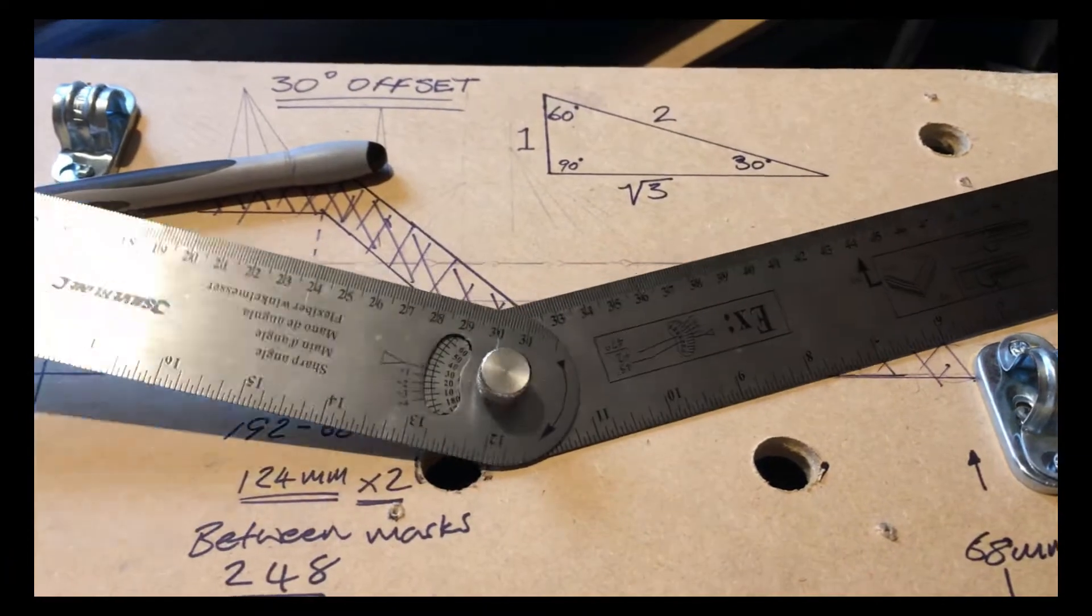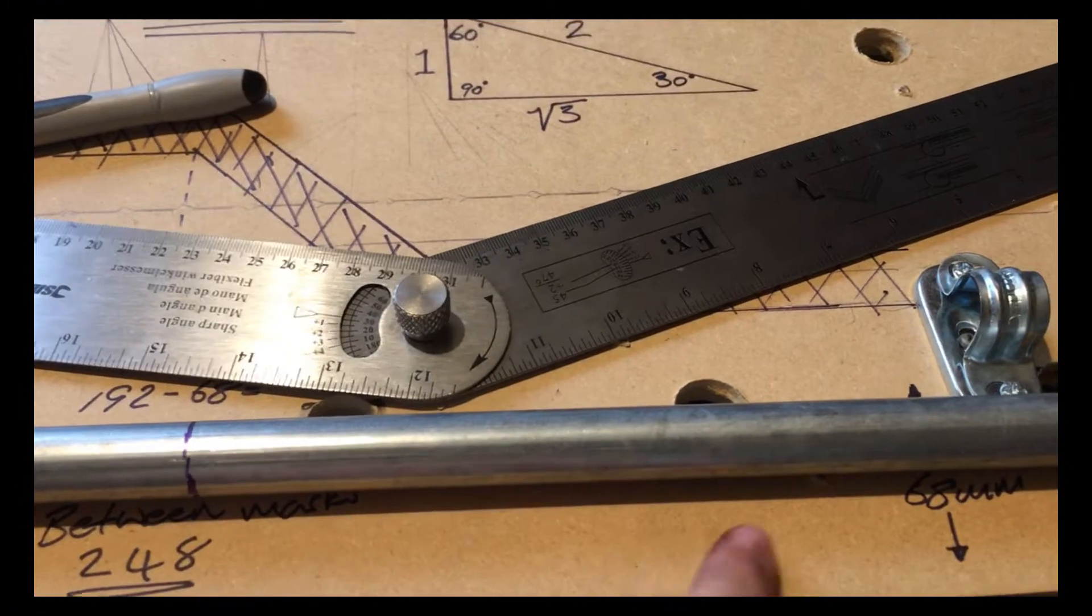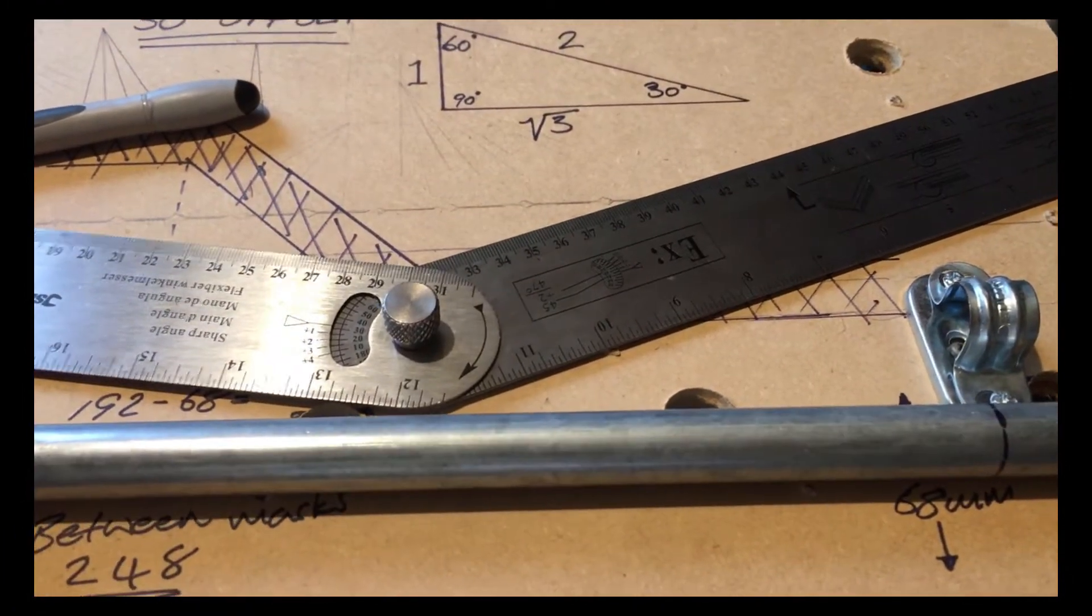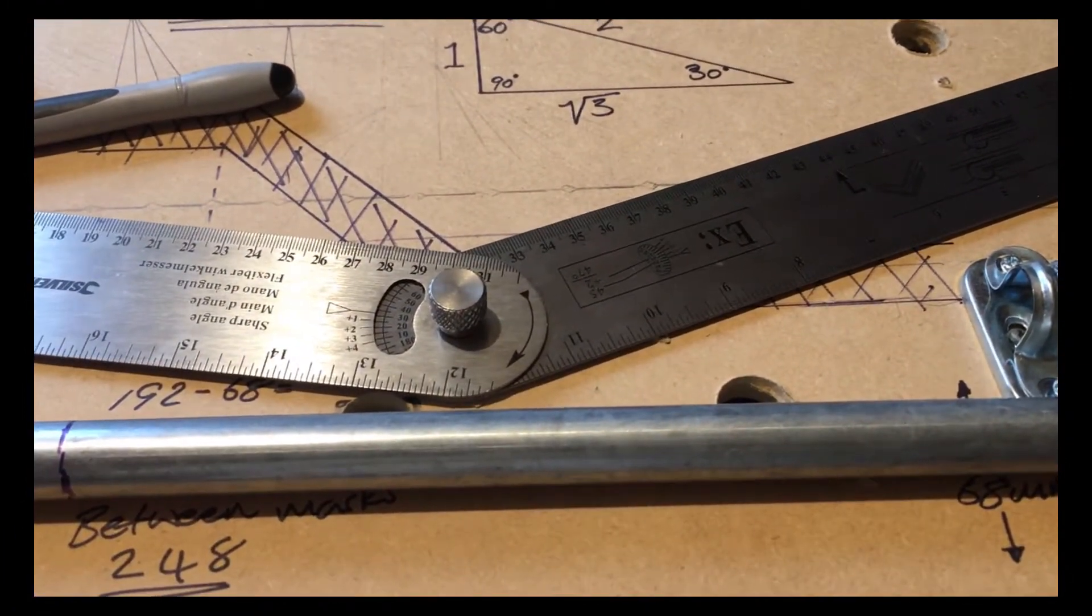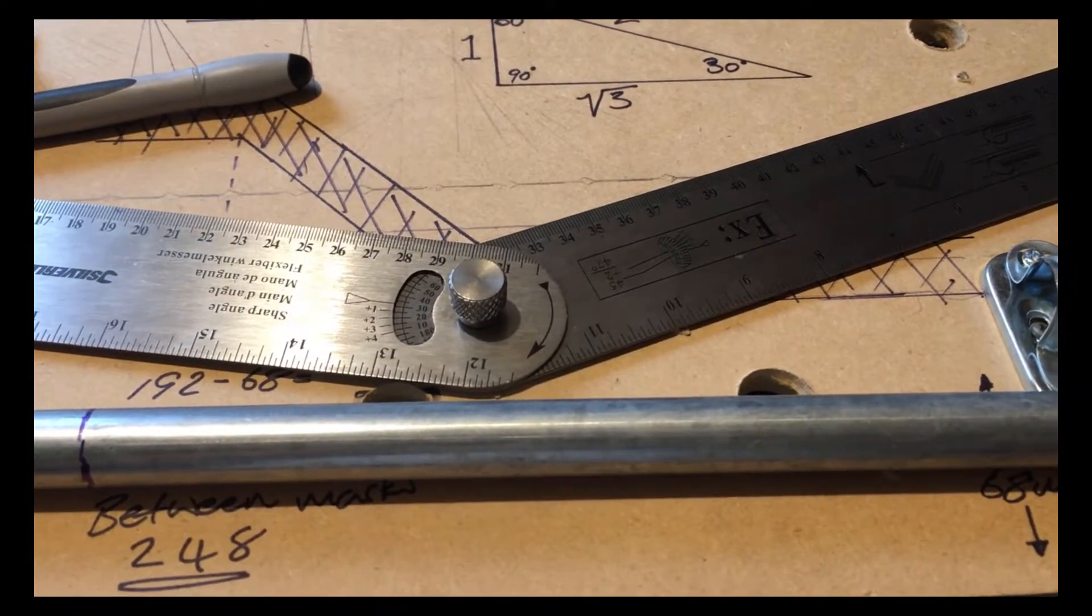Lock that off and that'll be our 30-degree angle that we can use to set the angle for our offset. So I'm going to put that in the bender, bend it up, and hopefully it will come out fairly accurate without having to muck about with it too much.